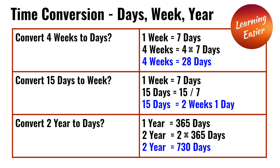Convert two years to days. We know a year is 365 days. Two times 365 is 730. So two years is equal to 730 days.